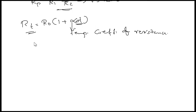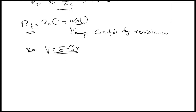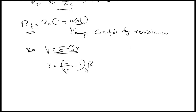Next, we learned how to find out internal resistance. The relation between internal resistance and potential difference: V = E - Ir. If an external resistance R is connected, internal resistance r = (E/V - 1) × R. Here E is the EMF and V is the potential difference.